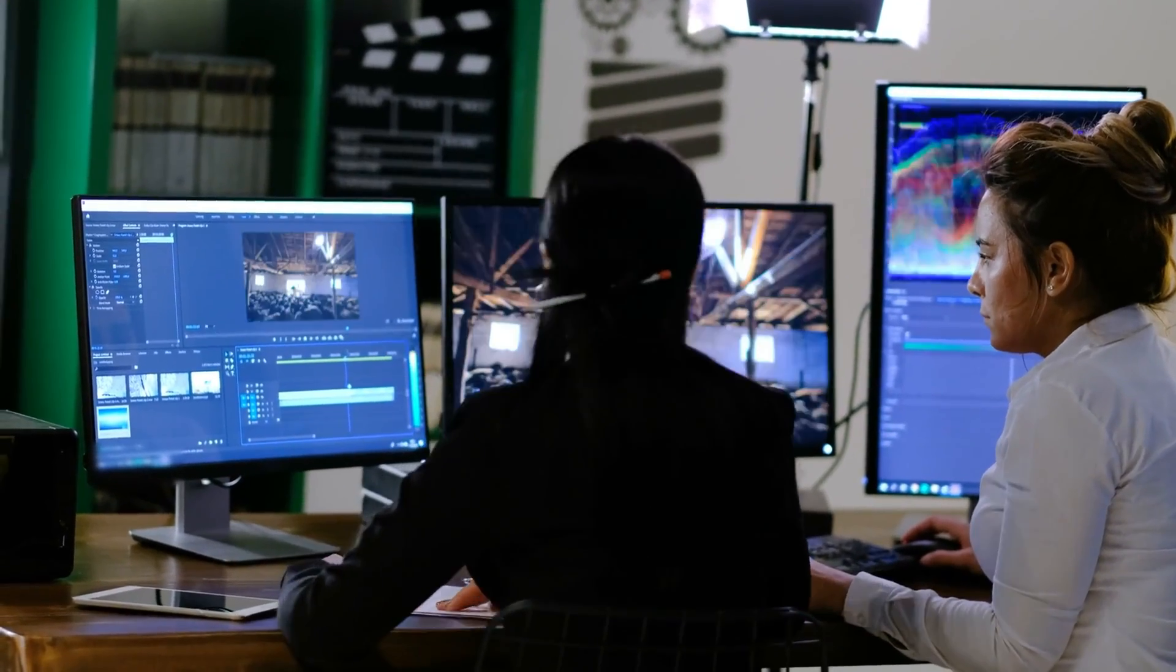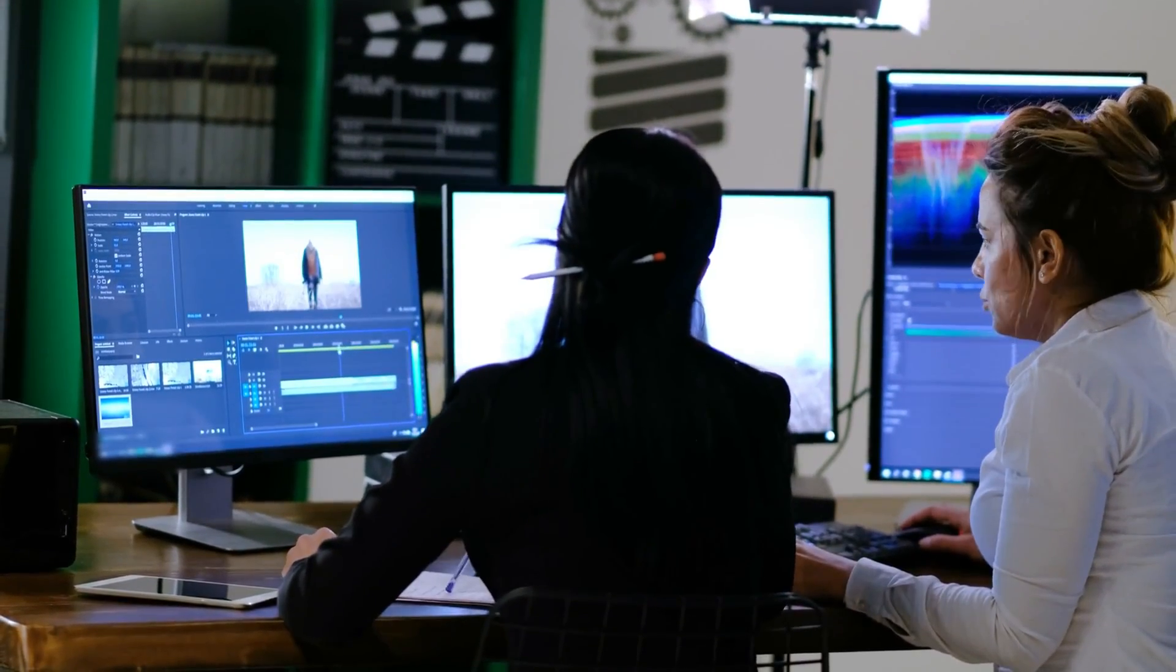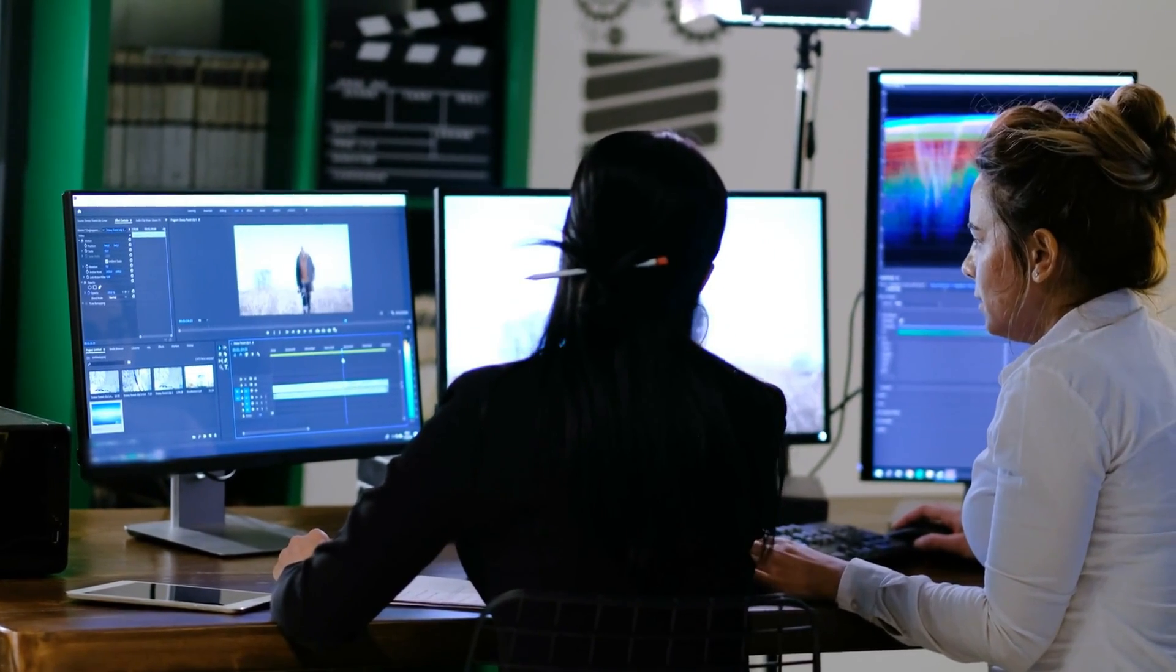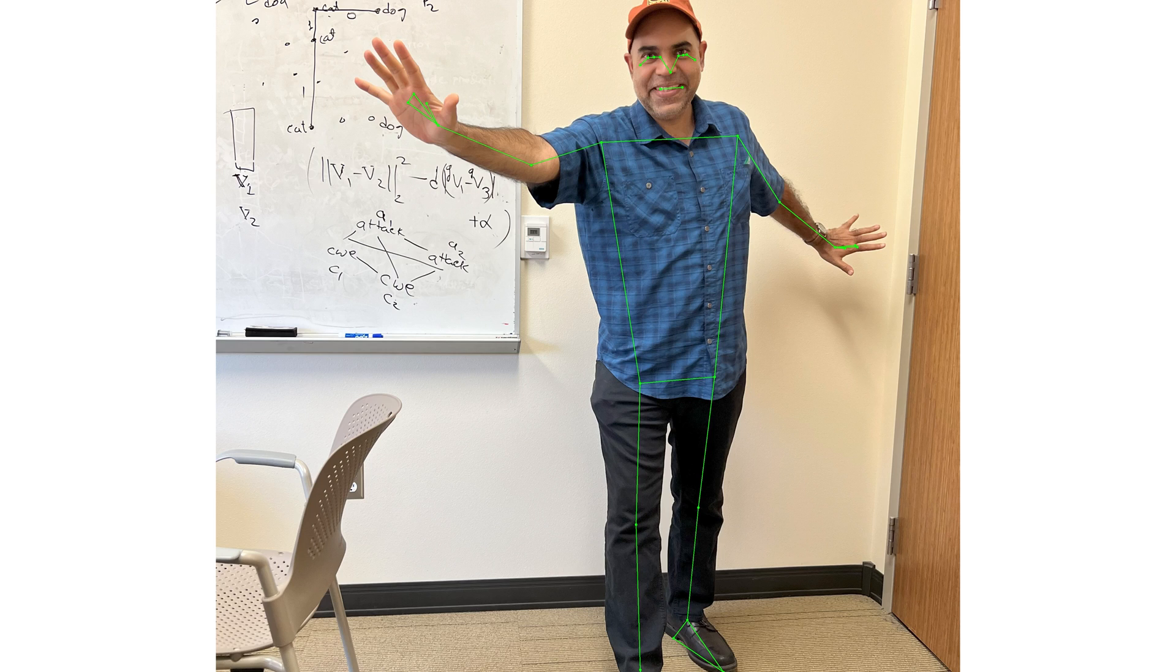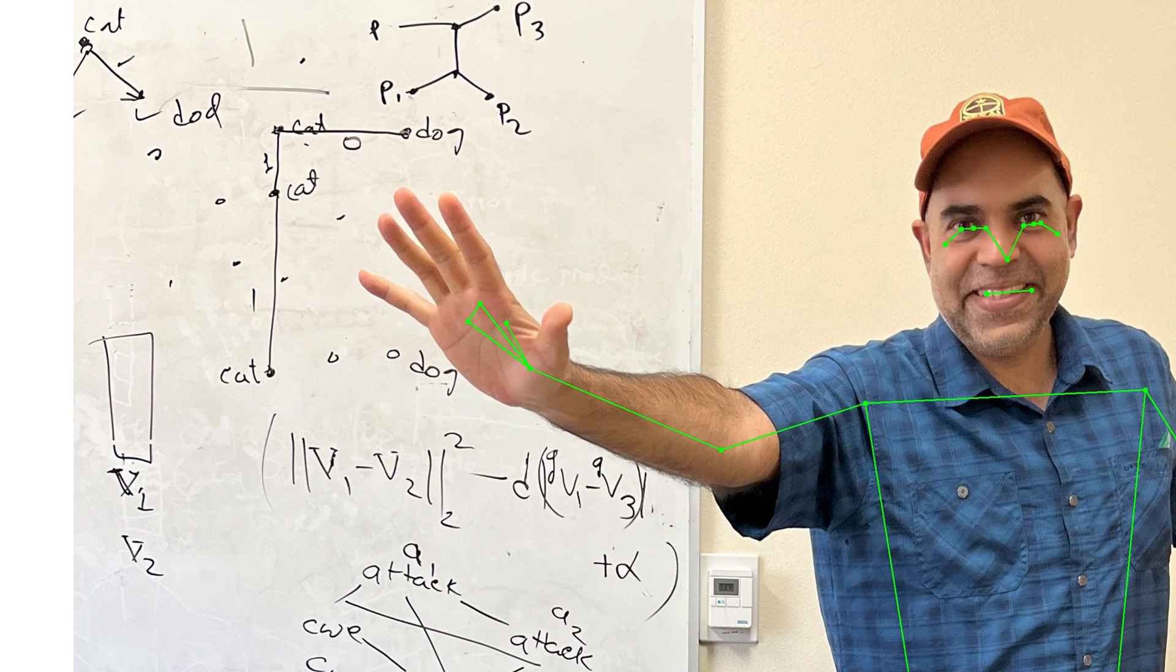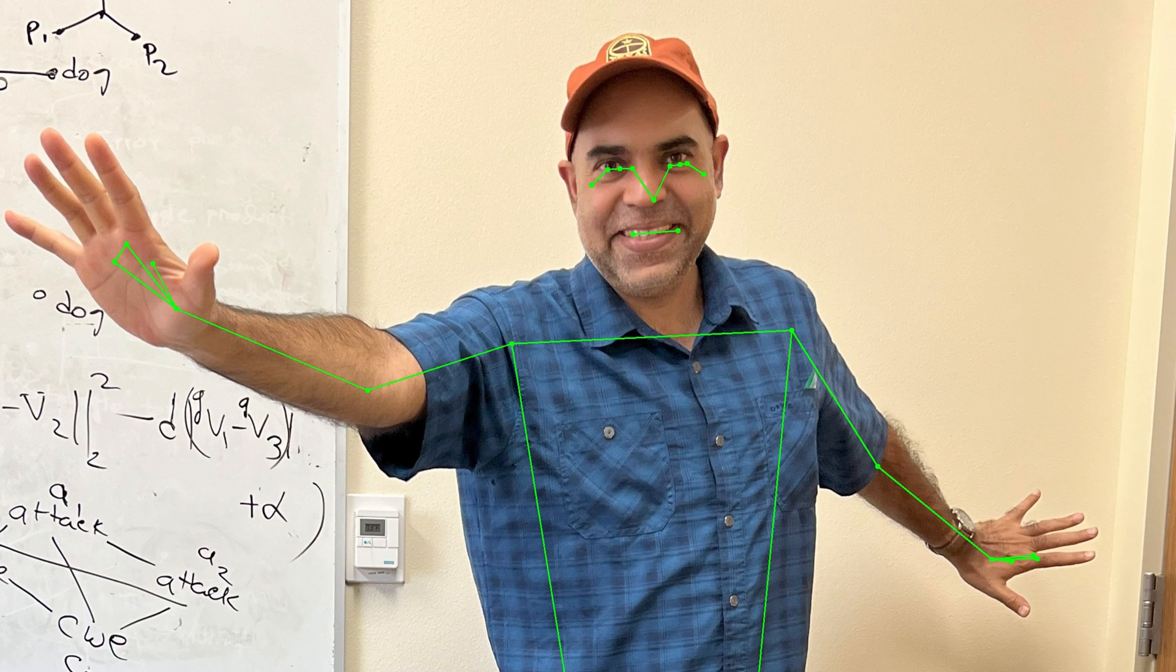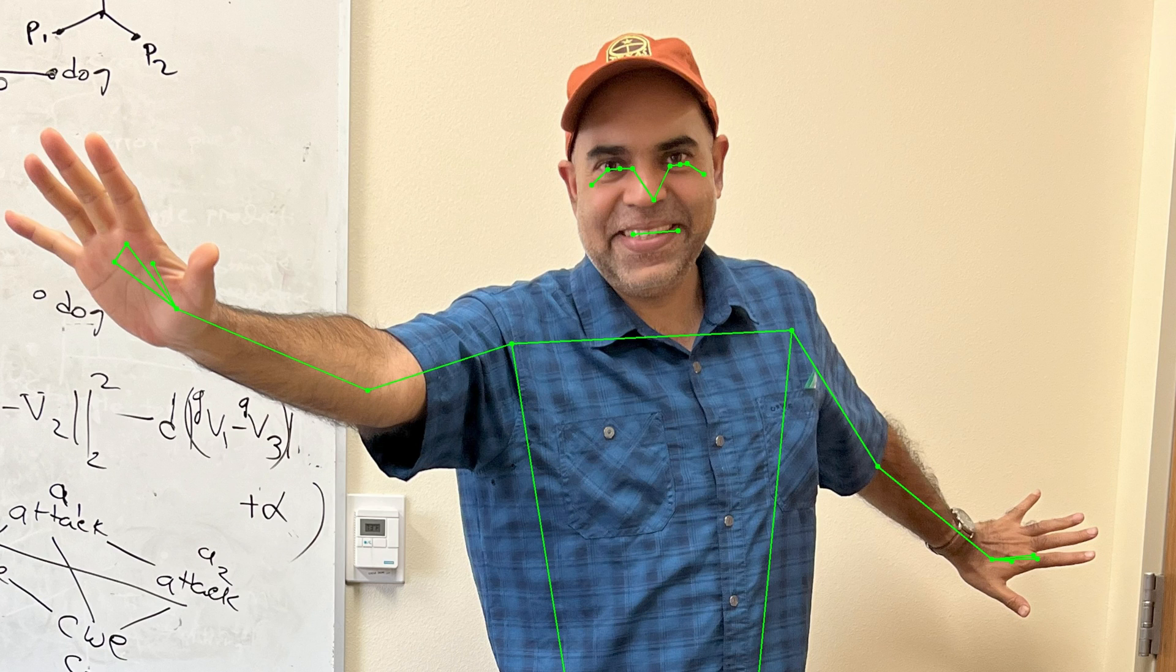In animation and film production, motion capture systems often require accurate pose estimation to create lifelike character animations. MediaPipe's ability to provide 3D pose data can significantly streamline this process, reducing the need for expensive and cumbersome motion capture suits.